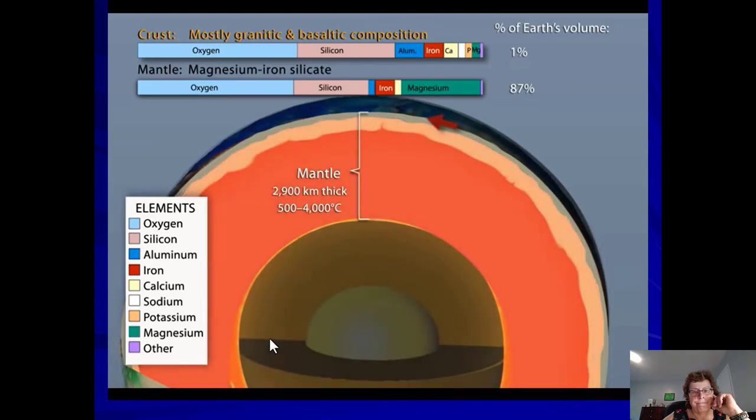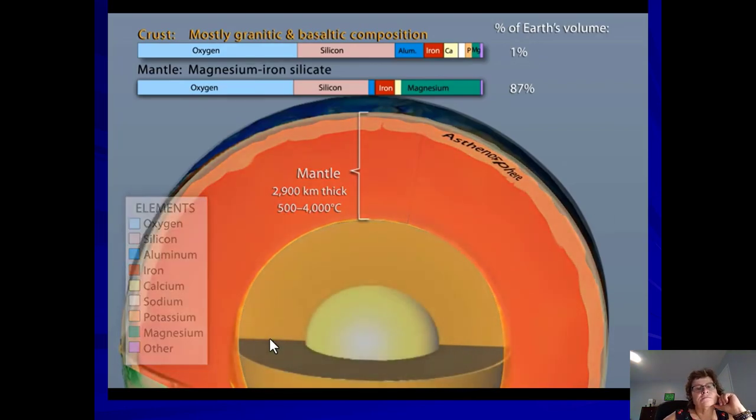Below this zone, the upper mantle becomes notably more plastic and malleable due to the right combination of heat and pressure. That ductile zone is known as the asthenosphere and varies up to 400 kilometers deep depending mainly on temperature. The lower mantle comprises 55% of the planet by volume and is denser and hotter than the upper mantle.